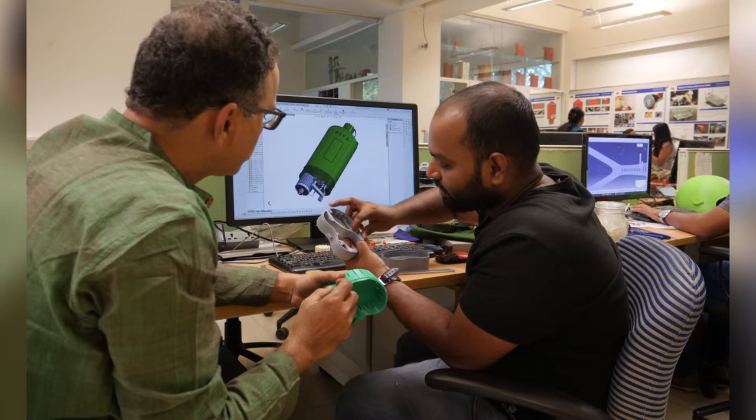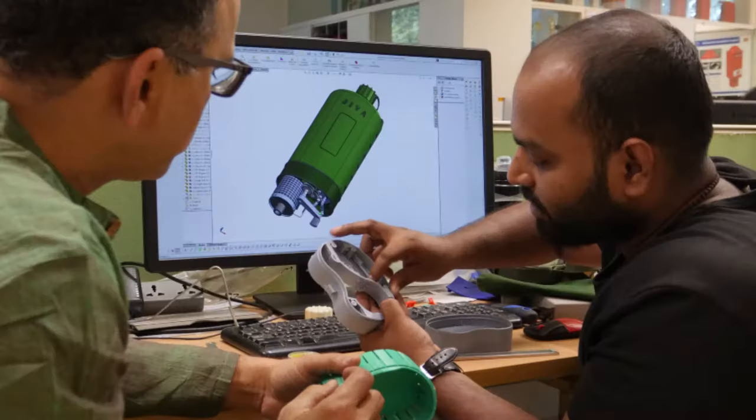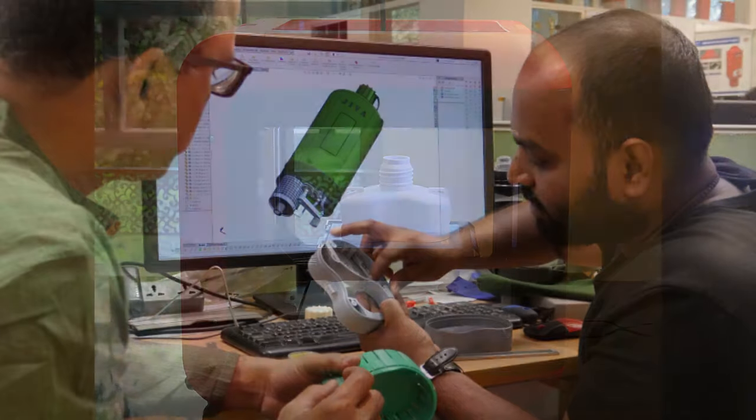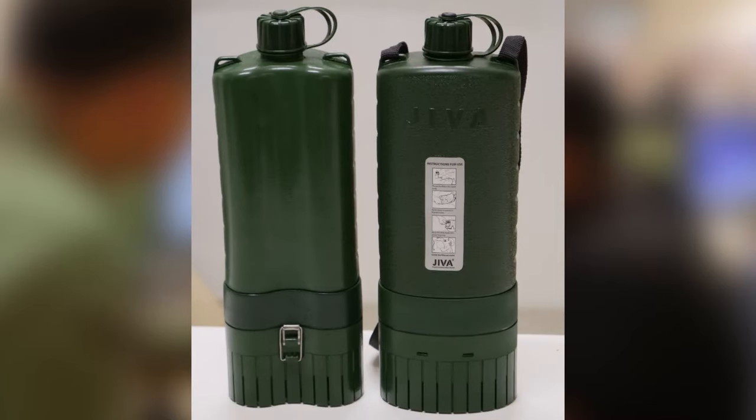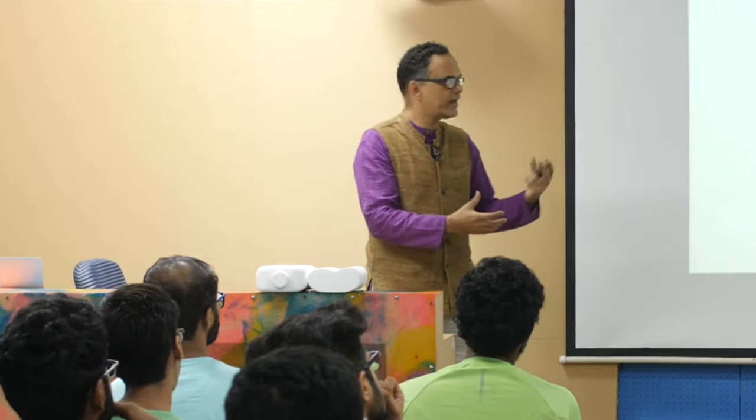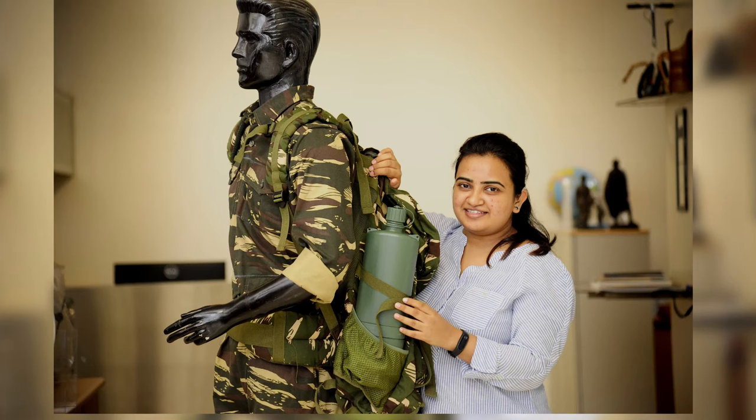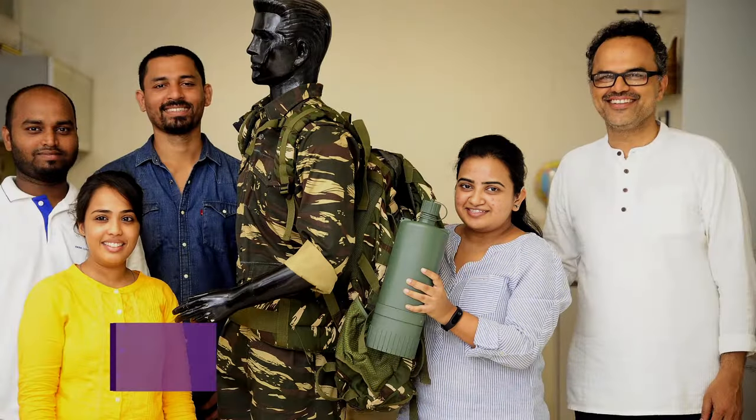After that we built the first 3D printed mockup. This is extremely important in the journey. It is still not filtering water, but it can actually contain water, we can check the weight of the bottle, we can check all the aspects in this design. We also had a mannequin on which we put the army fatigues, put the bag and put this bottle in the bag.